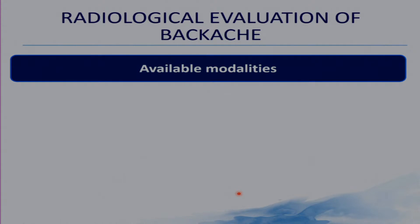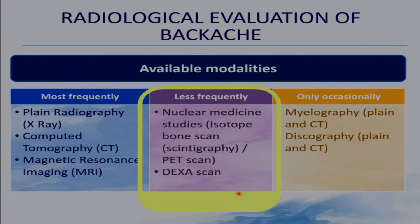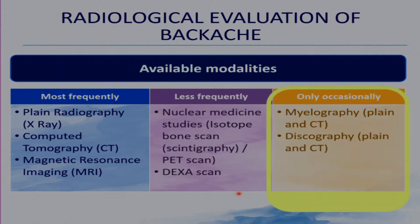Once we have decided to evaluate backache radiologically, there are various modalities available. Most frequently we use X-ray, CT, and MRI. Less frequently, we use nuclear medical imaging — that is isotope bone scanning, PET scanning, and possibly DEXA scan. Myelography and discography are only occasionally used.